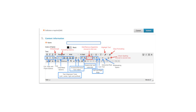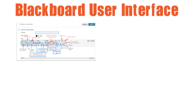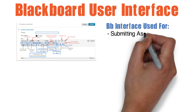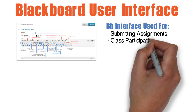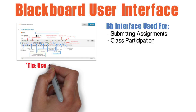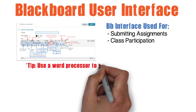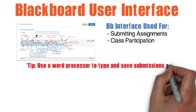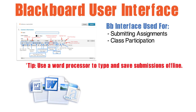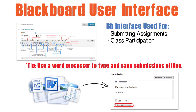Next, the primary means of contribution in Blackboard will be through the Blackboard user interface. You will use this interface to submit assignments and participate in interactive tools. It is highly recommended that you use a word processor to type and save submissions offline and copy and paste into Blackboard. In fact, in some instances you may be required to add an attachment, in which case this is a good habit to practice.